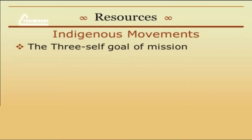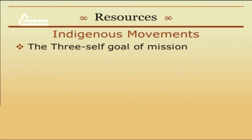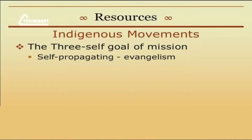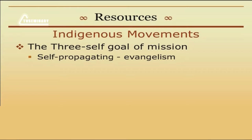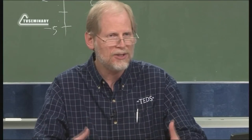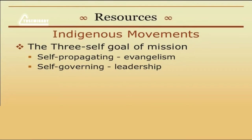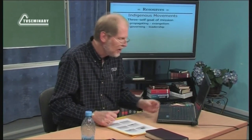The original idea developed by Venn and Anderson was called the Three Self Goal of Missions. Basically, when you plant a church, you want it to be self-propagating — it's not always the outside missionary doing the evangelism, but the local people start doing evangelism, and that church reproduces itself. Self-governing means you don't have a foreigner leading the church and making decisions, but you raise up local people who become the leaders, the pastors, the elders.